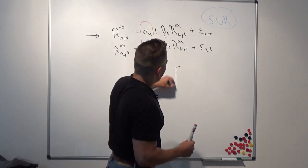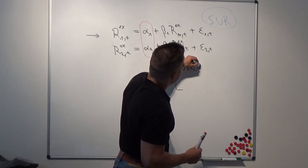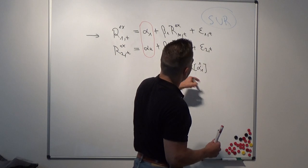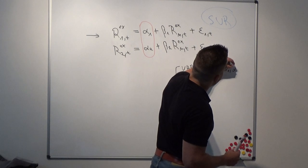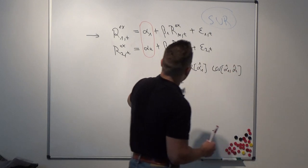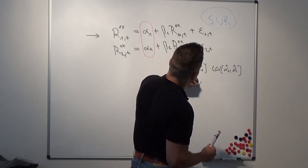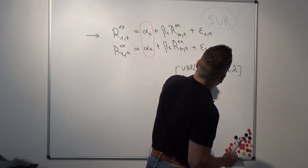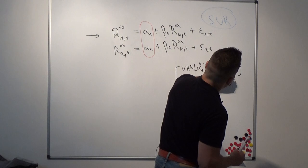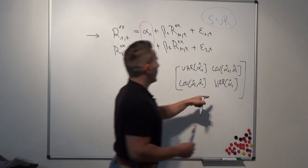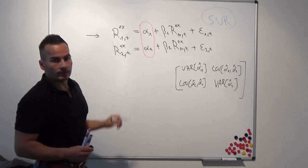The corresponding covariance matrix that we are interested in contains: the variance of the first point estimate α1, the covariance of α1 and α2, the covariance of α2 and α1, and on the main diagonal the variance of the point estimate α2.